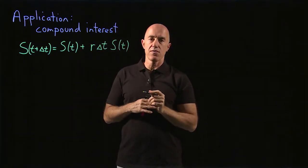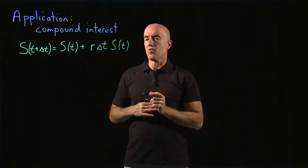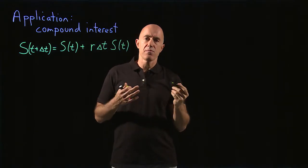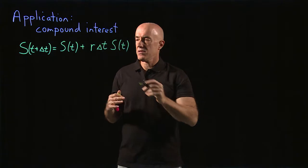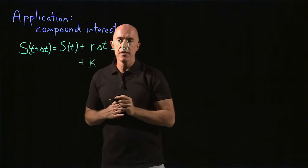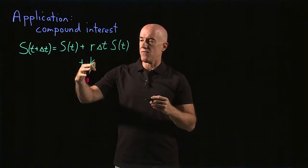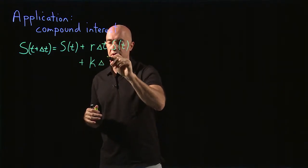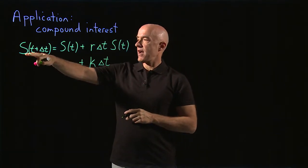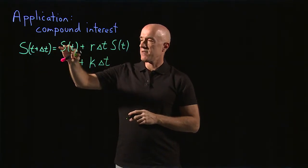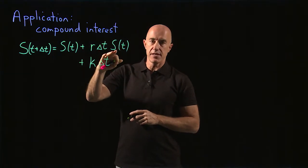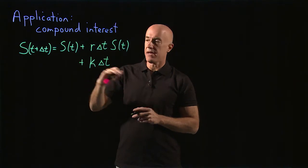That's the interest earned over the time period delta t. We'll add one more term: maybe you're depositing money into the account — say you're working and every month putting a fraction of your paycheck in. So let's say you're putting k dollars per year into the account. Over the period delta t you add k times delta t. So the amount at t plus delta t equals the amount at t plus interest r·s(t)·delta t plus deposits k·delta t.